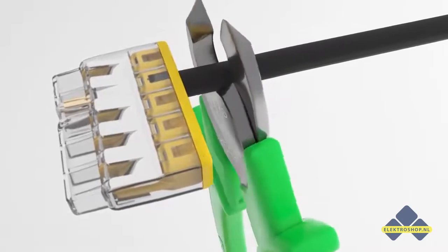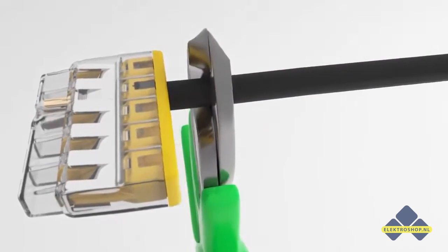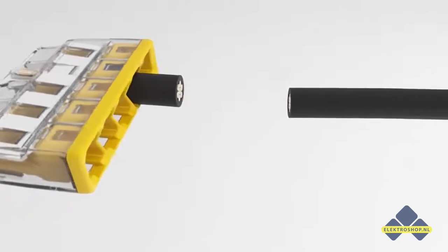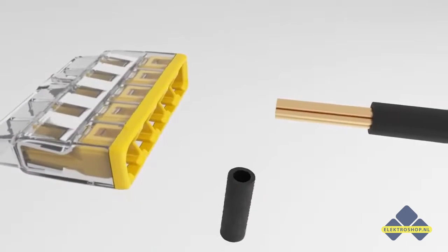Stranded conductors cannot be removed once they are connected. They are just cut off close to the connector, stripped again and pushed into a new connector.